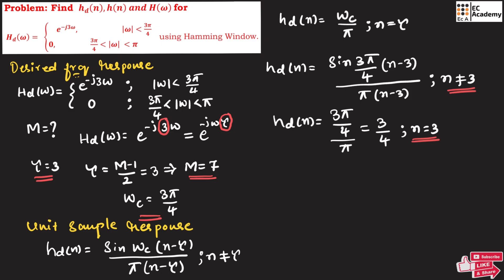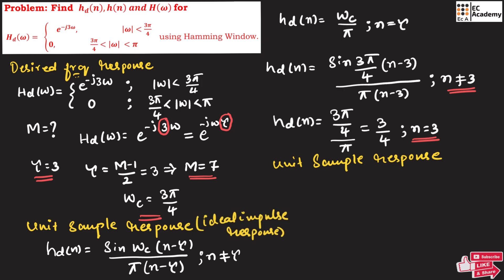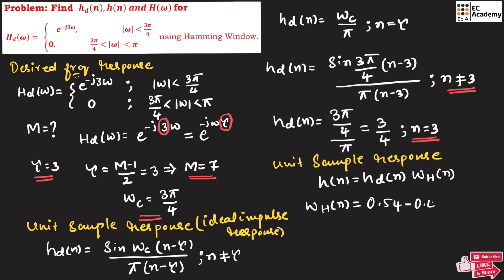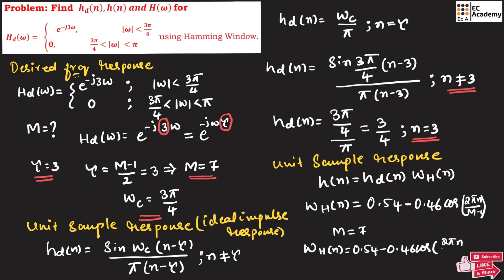Now let us write the unit sample response of a FIR filter: h(n) = hd(n) · w_h(n), where the Hamming window is w_h(n) = 0.54 − 0.46·cos(2πn/(M−1)). Substituting M = 7, we get w_h(n) = 0.54 − 0.46·cos(2πn/6).